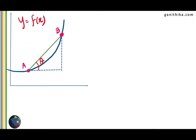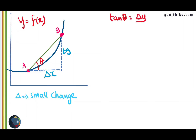Since A and B are very close to each other, the difference in the x-coordinates and the y-coordinates are very very small, therefore we call them delta x and delta y. In mathematics, delta is the symbol used for small changes. The difference in x is very small and the difference in y coordinates is also very small, therefore we use delta x and delta y to indicate those two sides of the right angle triangle, which gives us the relation tan(theta) equal to delta y over delta x.